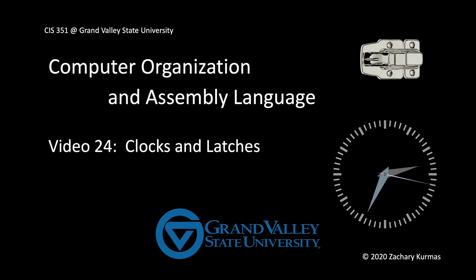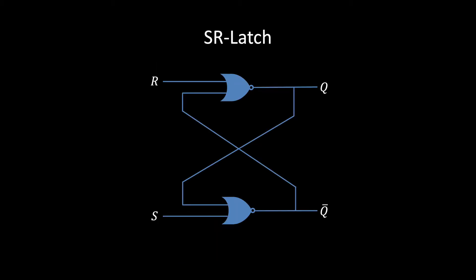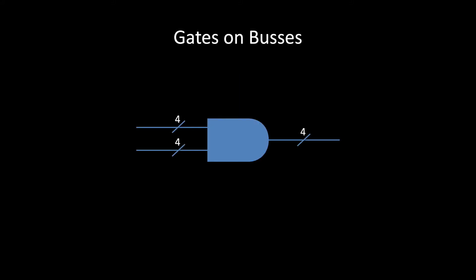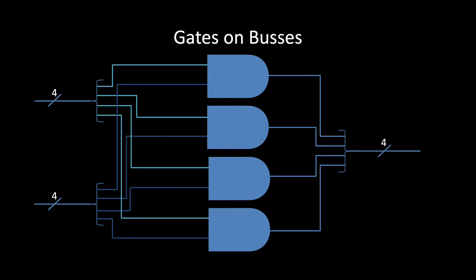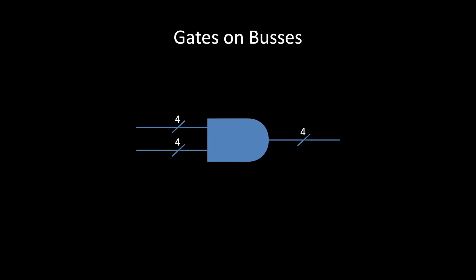The previous video shows how to build an SR latch, a device that can store one bit of data. Before using these latches to make circuits, I need to explain this notation: drawing a logic gate on a bus is a shortcut for placing a gate on each corresponding pair of wires. Combining these parallel gates into a single symbol makes the diagram much easier to understand.